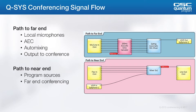The most basic signal flow for systems without local reinforcement has two distinct signal paths. The path to the far end includes the microphone input block, the AEC processing, an auto mix of the conferencing mics, and finally the transmit block to the far end. In this example, it's a soft phone transmit block, but this could be a USB transmit or a line level output fed to an outboard codec. In some systems, it may be a combination of multiple of these or all of these.